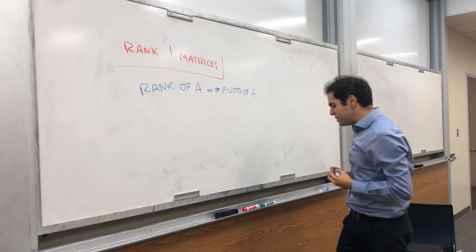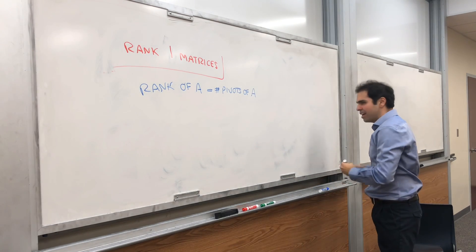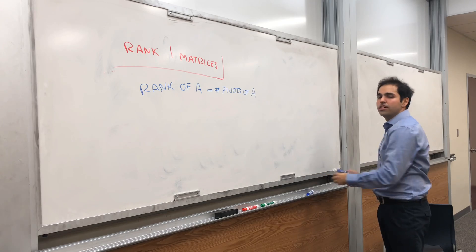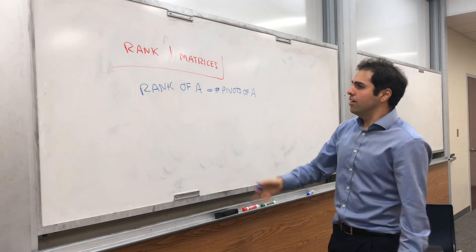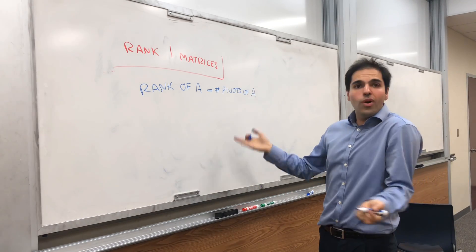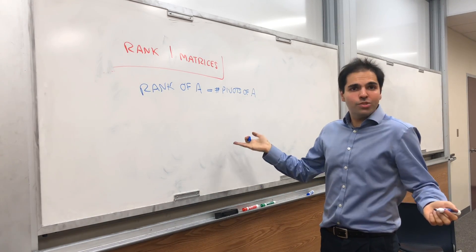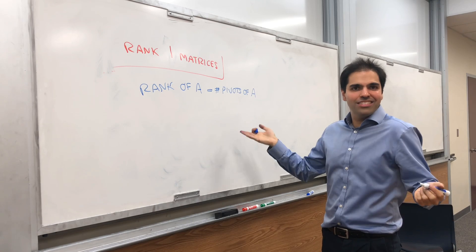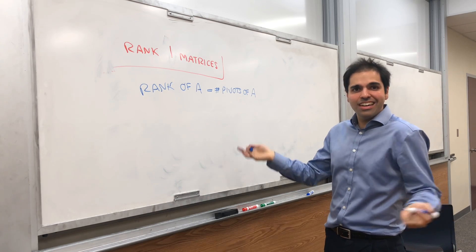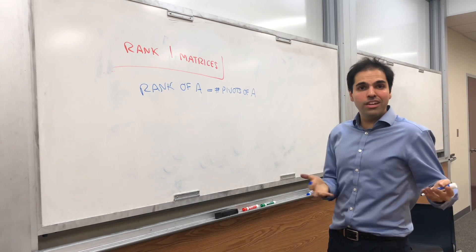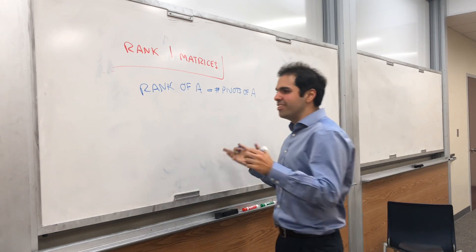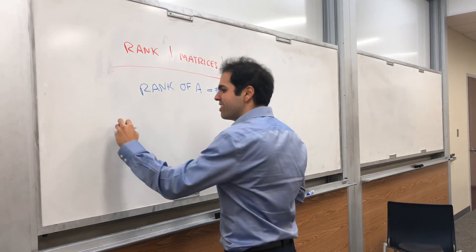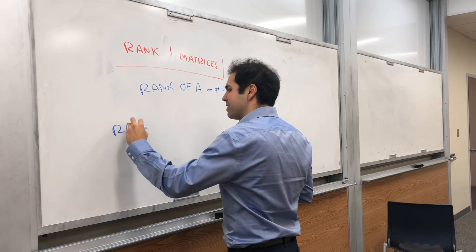Strictly speaking, it's the dimension of the column space. Now, what would matrices of rank zero look like? Zero means no pivots, which is just the zero matrix.